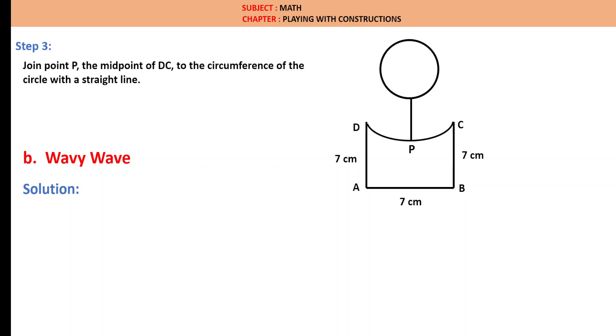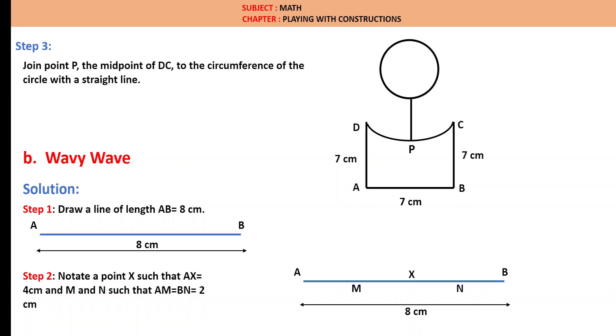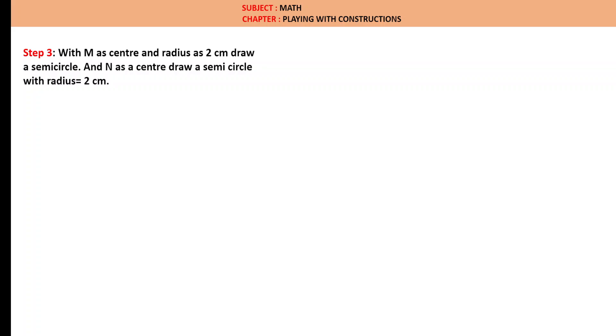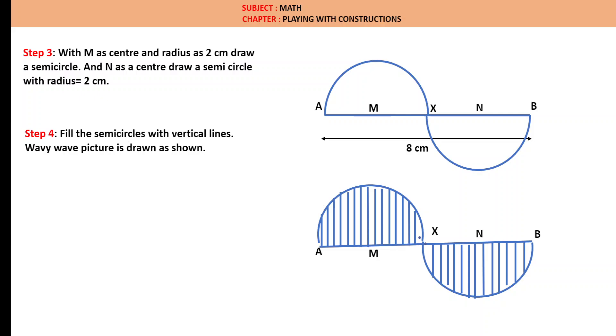Subsection B: Wavy wave solution. Let us draw a line AB of length 8 cm and notate point X such that AX equals 4 cm and BX equals 4 cm. Let us draw midpoint M such that AM equals 2 cm and XM equals 2 cm. Similarly, notate N midpoint of BX such that XN equals BN equals 2 cm. Step 3: With M as center, let us draw a 2 cm radius arc semicircle. Similarly, with N as center, let us draw one more semicircle downside as shown in the figure. Step 4: Fill the semicircles with vertical lines. This is the required wavy wave.